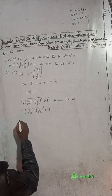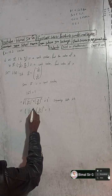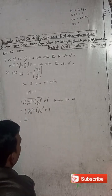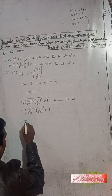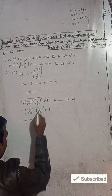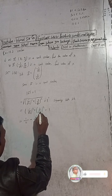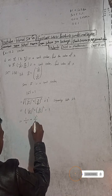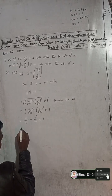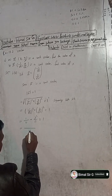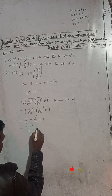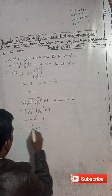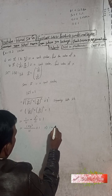Expanding: 1/11 plus y squared/11 equals 1. Multiplying through, we get 1 plus y squared equals 11. Therefore y squared equals 11 minus 1, which gives 1 plus y squared equals 11.